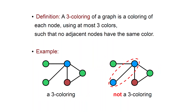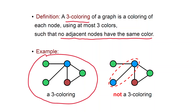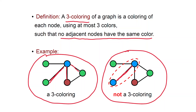If you have a graph, then a 3-Coloring of the graph is a coloring of each node using at most 3 colors such that no adjacent nodes have the same color. The 3Color problem is: given a graph, can the graph be 3-Colorable?